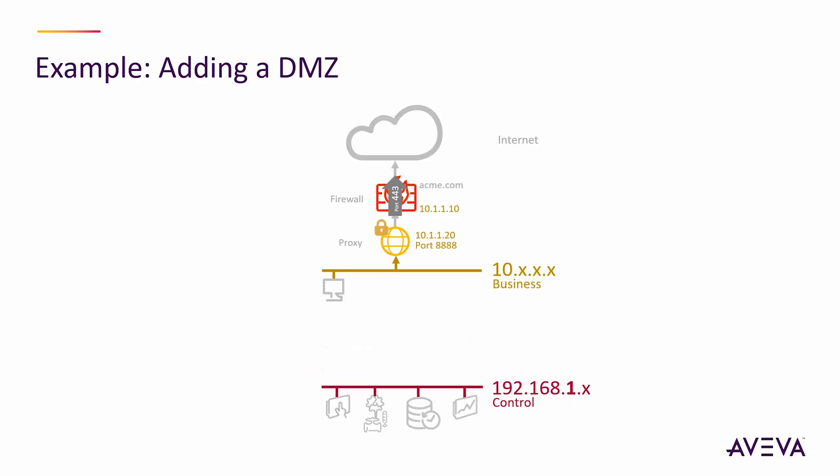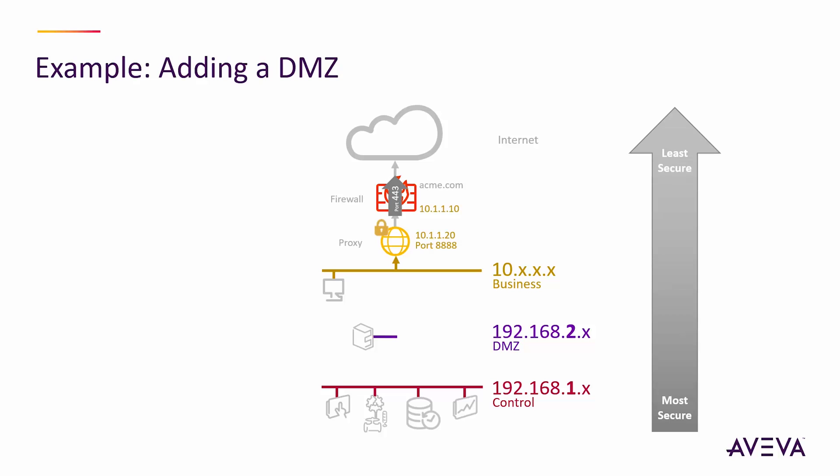How does this work with the control network that has all your instrumentation, control system, and supervisory control on an isolated network on a different subnet? The way you bridge this with the business network is by having another network in between called a DMZ, or demilitarized zone — as in the area between North and South Korea. Just as in that case, the DMZ is neither on the business network nor on the control network; it's a different subnet. The basic philosophy is that we move from the more secure control network through to the internet, the least secure network. We'd have a firewall between the business network and the DMZ, and also one between the DMZ and the control network.